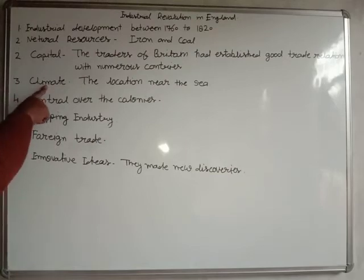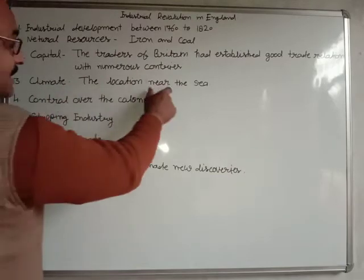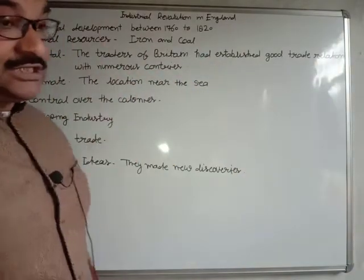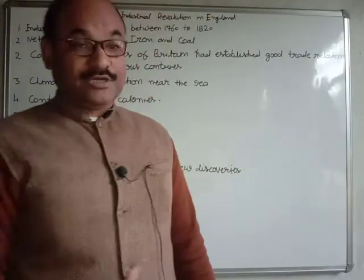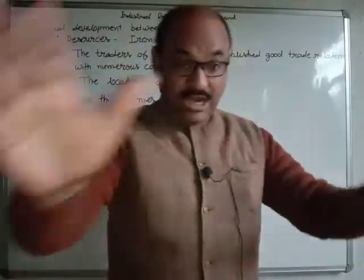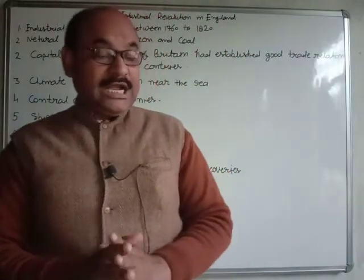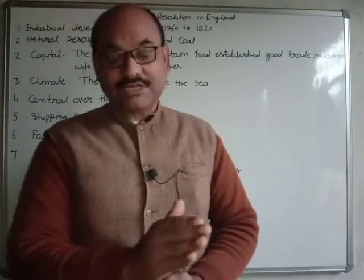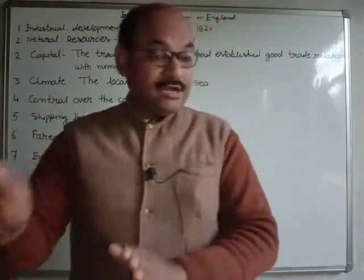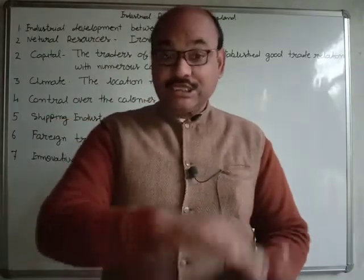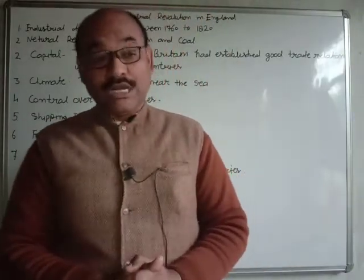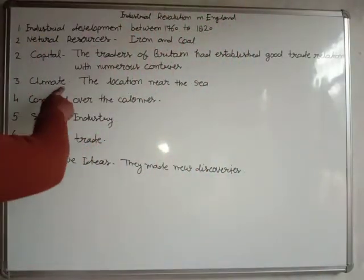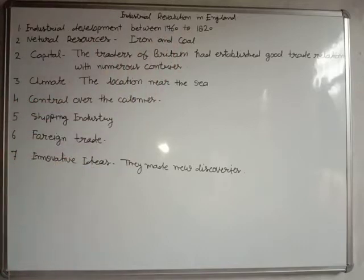The third cause was climate and location. Britain is located near the sea, and this location provided the best support and best links to all over the world, enabling whatever trade and routes were possible at that time. British merchants could easily export and import raw materials and products. So climate and geographic position became the next cause of the Industrial Revolution in Britain.